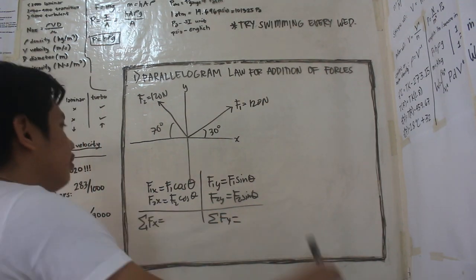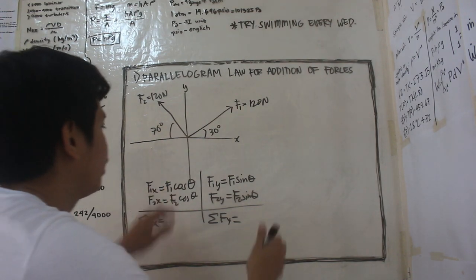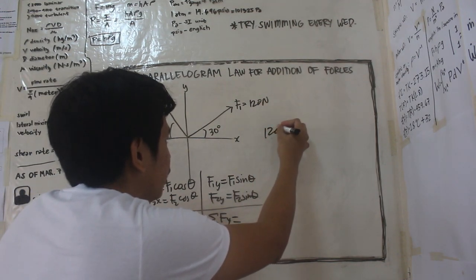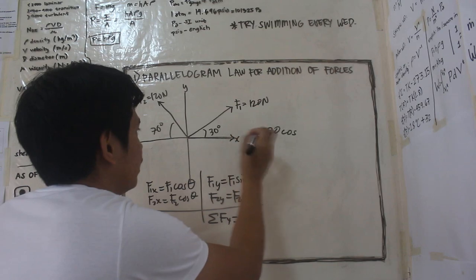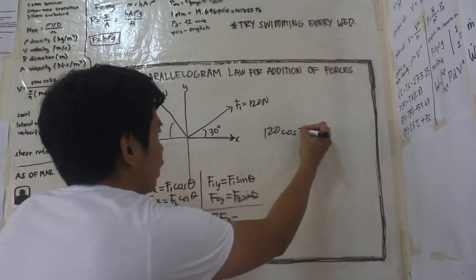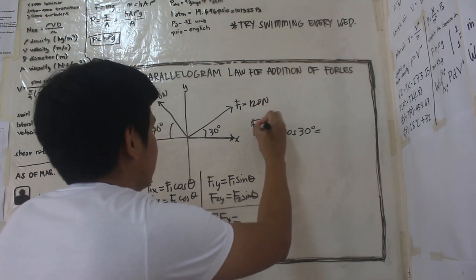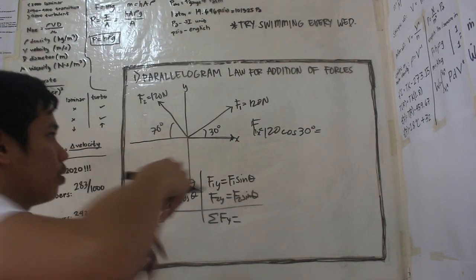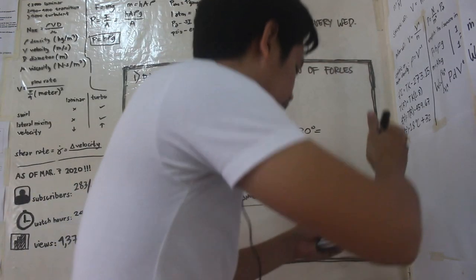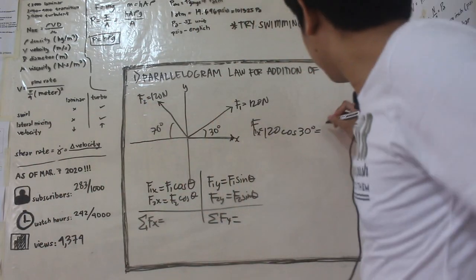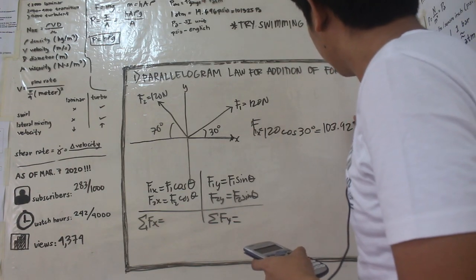So hanapin muna natin yung f1 cosine theta guys. f1 cosine theta, ilan yung f1 natin? It's 120 newtons, cosine 30 degrees. So magbibase sa iyo guys sa positive x-axis. Cosine 30 degrees, which is, f1 of x is equal to, solve natin, 120 cosine 30, so it's 60 square root of 3, or roughly 103.92 newtons.